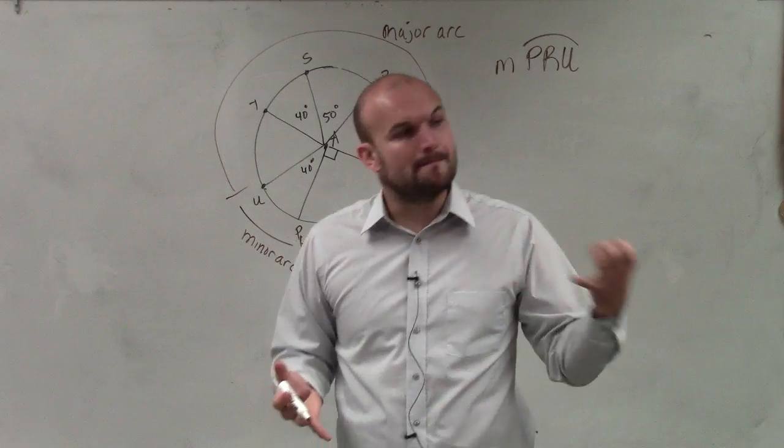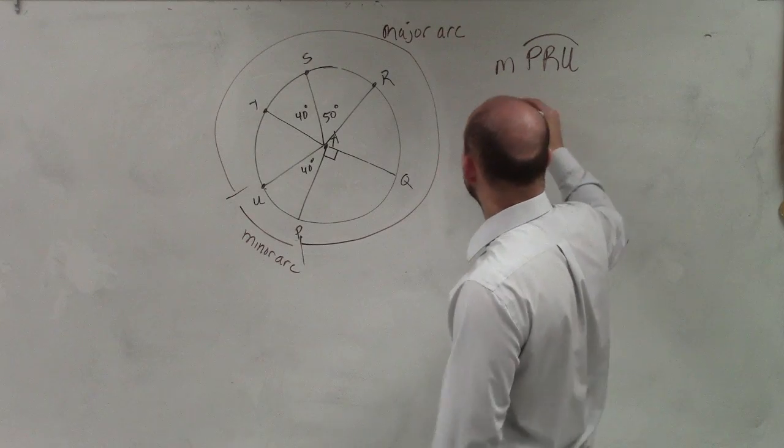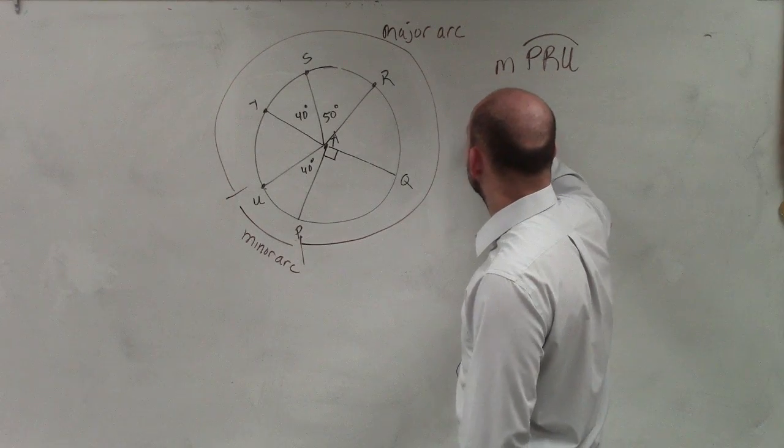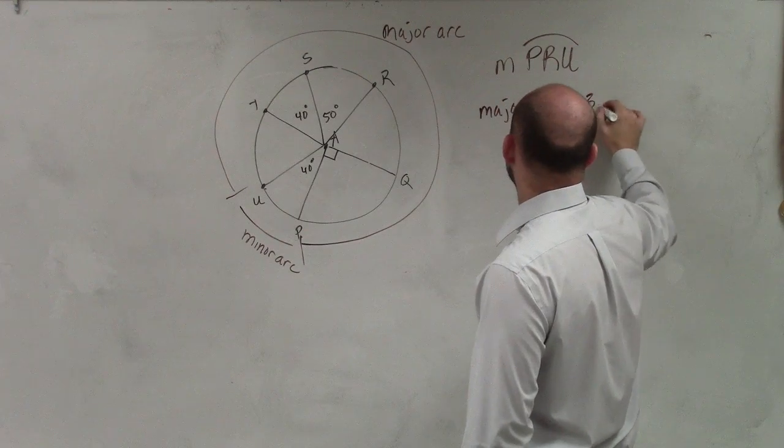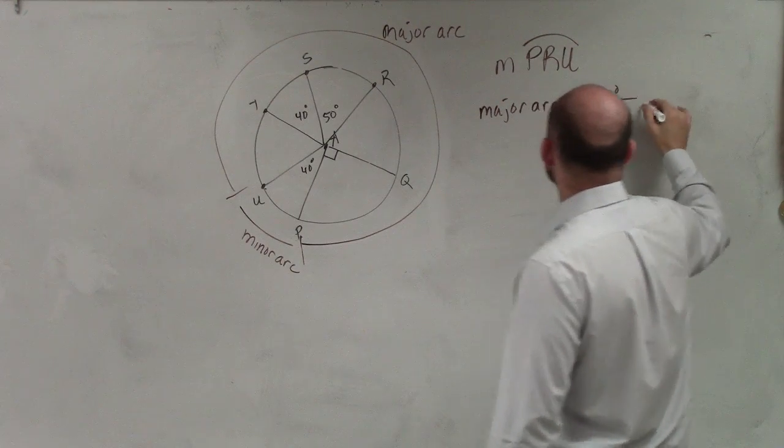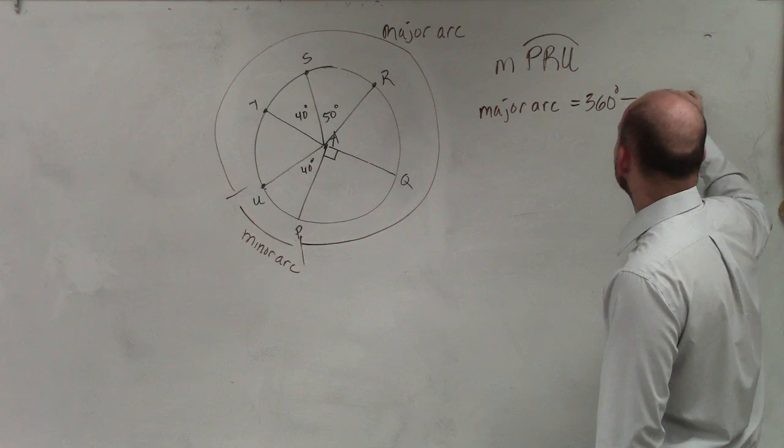To find the measurement of the major arc, if you guys remember, all you simply need to do is: major arc equals 360 degrees minus the measure of the minor arc.